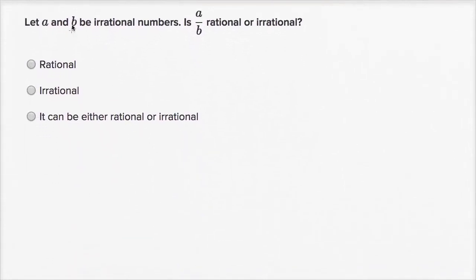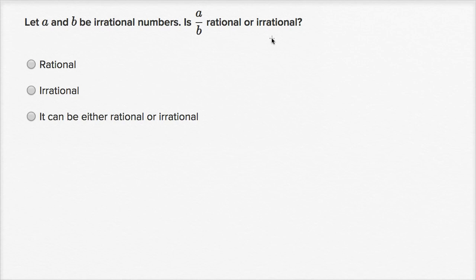Now we're saying let A and B be irrational numbers. Is A over B rational or irrational? Pause the video and try to think this through. You might want to try some examples of irrational numbers and see if when you divide them, you can get rational or irrational numbers.